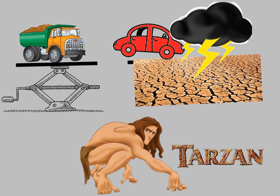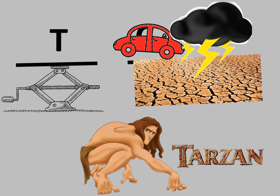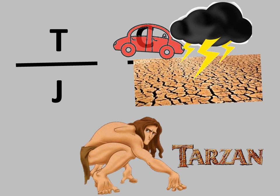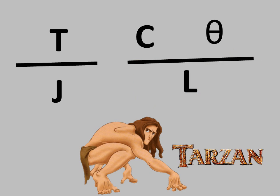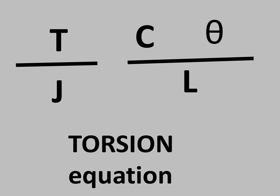Truck becomes T, jack becomes J, car becomes C, thunder becomes theta, land becomes L, Tarzan becomes Torsion equation.